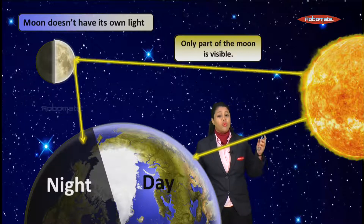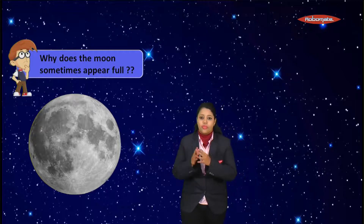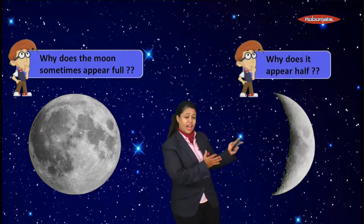Since we can only see one side of the Moon, the question arises — why does the Moon sometimes appear full and sometimes appear half? Let's understand this by looking at the different phases of the Moon, that is, the different shapes the Moon appears in.